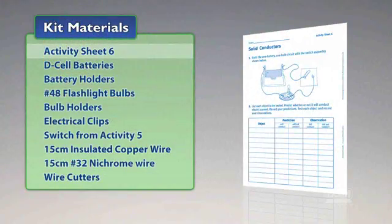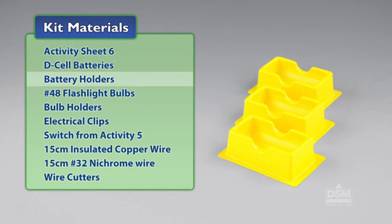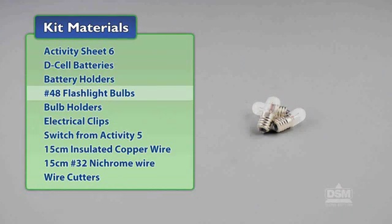You will need the following materials from the kit: Activity sheet 6, D-cell batteries, battery holders, number 48 flashlight bulbs, and bulb holders.